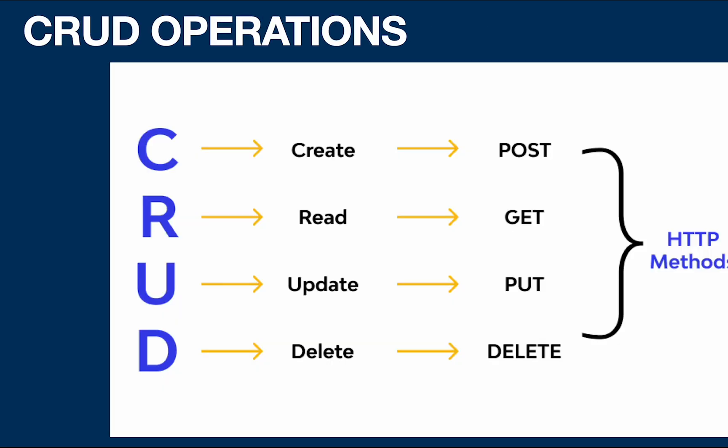In database terms we have CRUD operations: C stands for Create, R for Retrieve, U for Update, and D for Delete. These indicate creating, retrieving, updating, and deleting a row in the database. These CRUD operations can be implemented in Django with very little code using Django REST Framework. In general, for creating a row we use the POST HTTP method, for reading we use GET, for update we use PUT, and for delete we use the DELETE HTTP method.